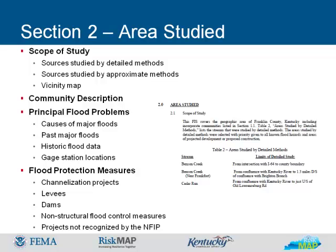Channelization projects are man-made channels or waterways designed to increase the flow-carrying capacity of the channels and thereby reduce the flood elevation. For a channelization project, the information in this section includes the type of channel (grass, concrete, or other), the name of the agency or organization that constructed the channel, the date of construction, and the name of the agency or organization that maintains the channel. The section also indicates whether the base flood is contained in the channel and, if not, the extent of flooding outside the channel.